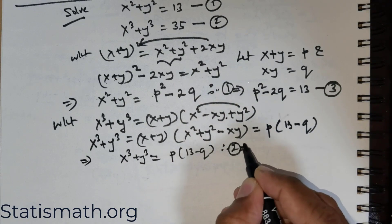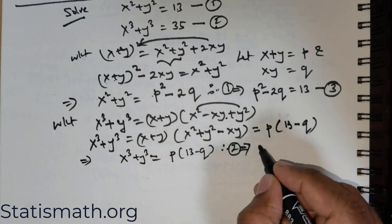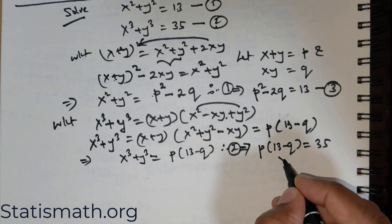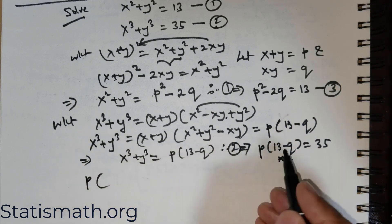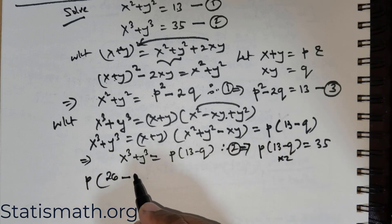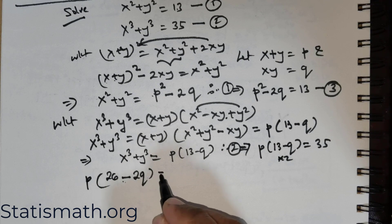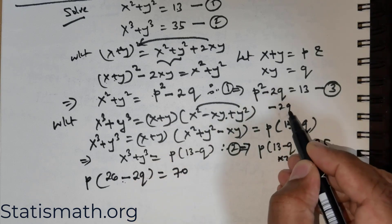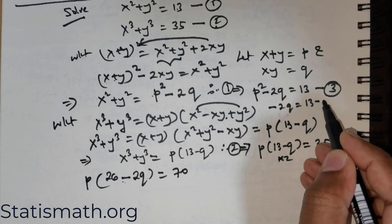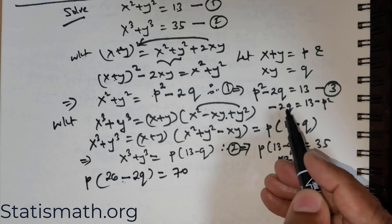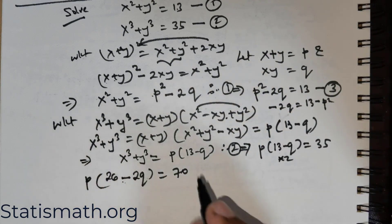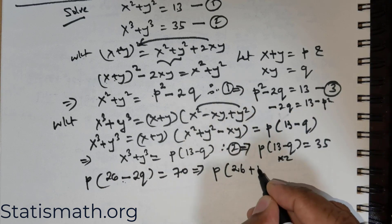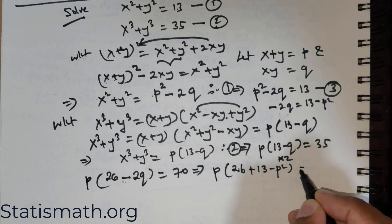I utilize this in equation (2), which can now be rewritten as p(13 − q) = 35. I multiply this quantity by 2: p(26 − 2q) = 70. The reason for this is that I can use the value of 2q, which from equation (3) is p² − 13 (rearranged with a negative sign). So substituting, I have: p times (26 + (13 − p²)) = 70.